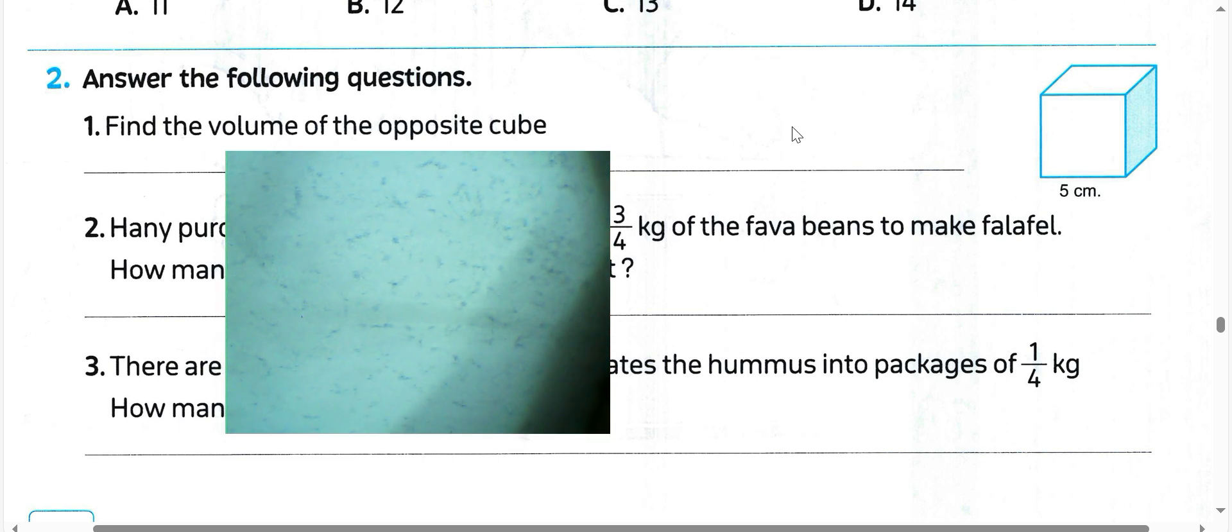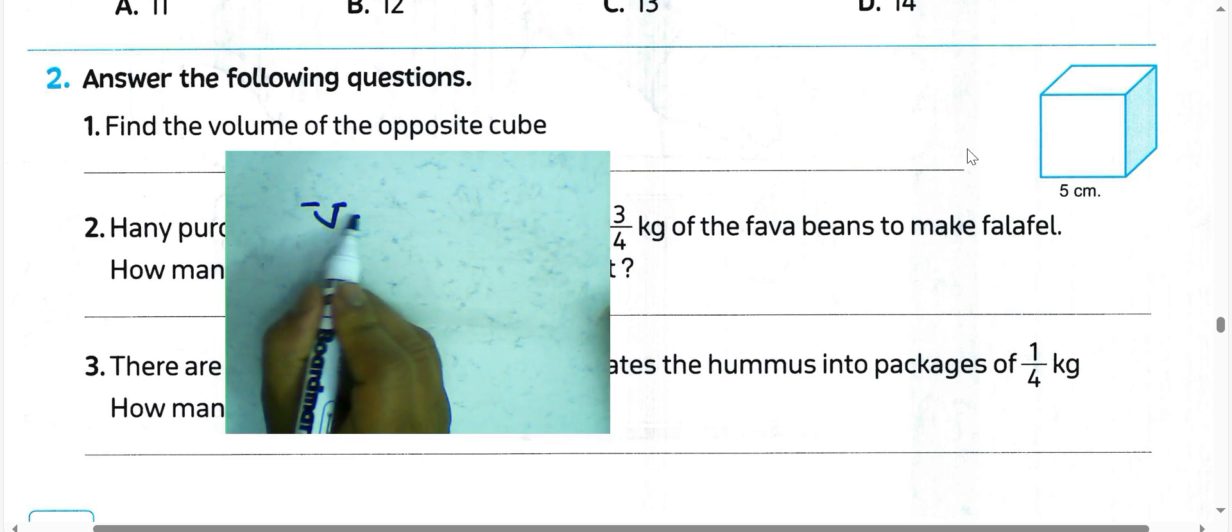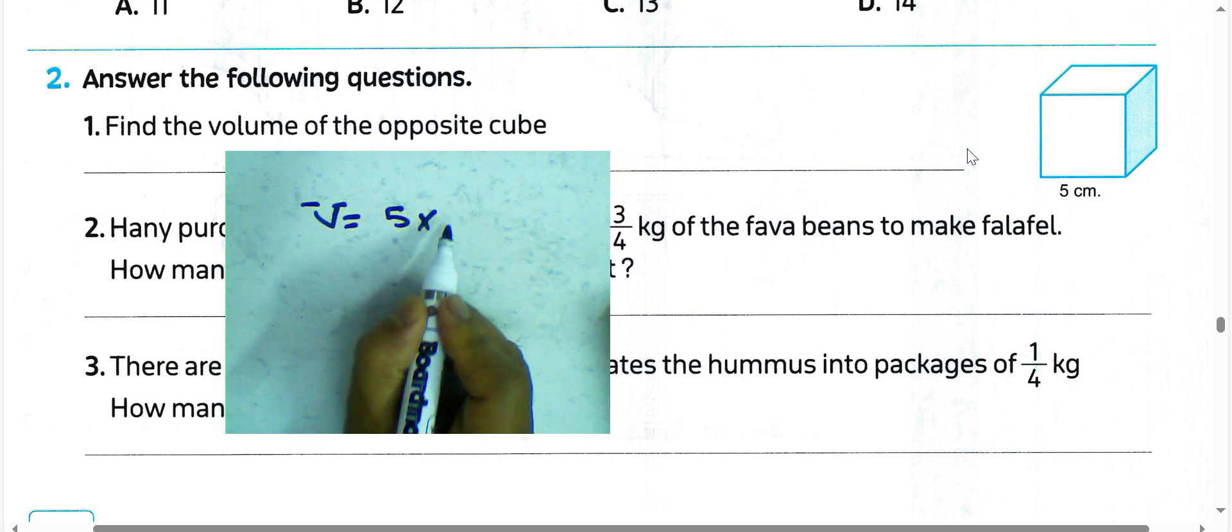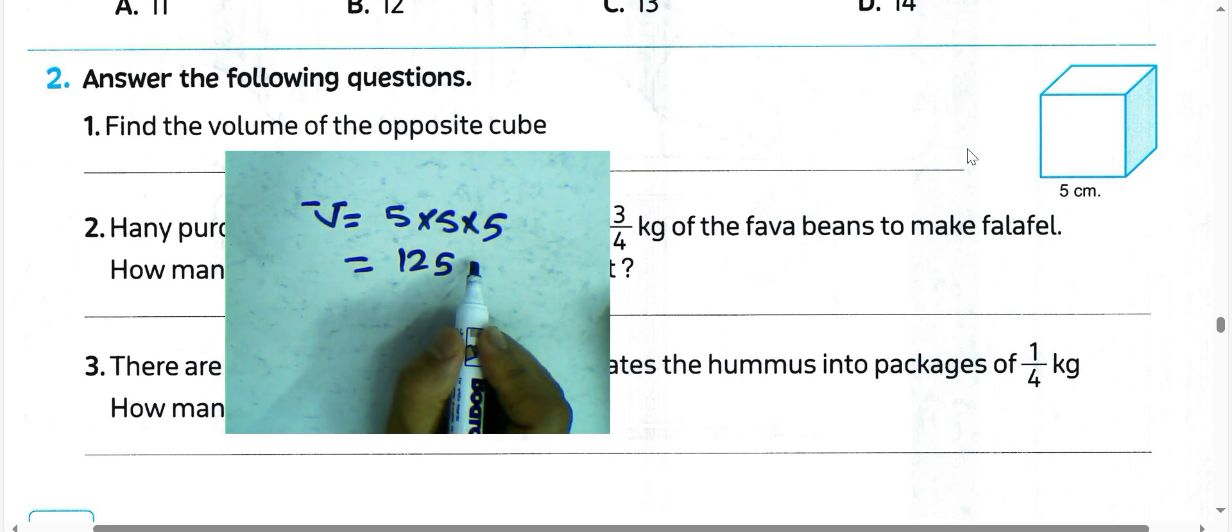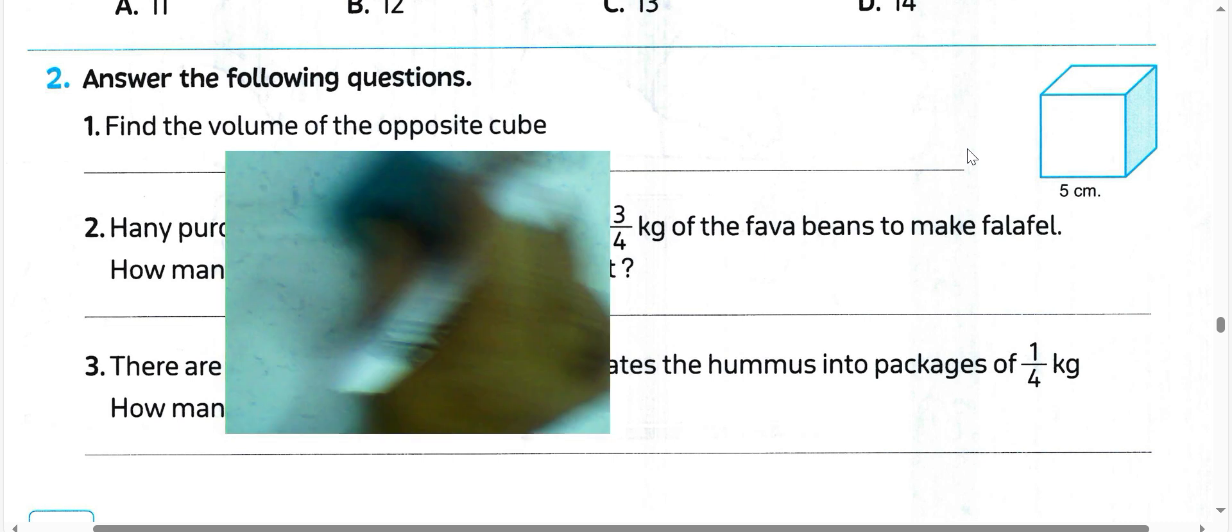Find the volume of the cube: 5 times 5 times 5 equals 125 cubic centimeters.